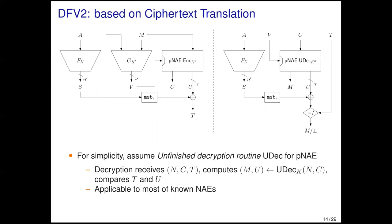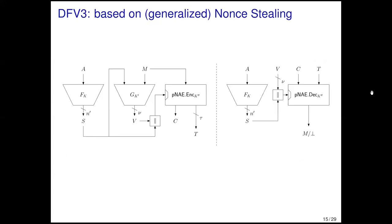This slide shows DFB2's encryption and decryption. For simplicity, we assume an unfinished decryption routine, denoted by U-Dec, for the plain nonce-based encryption. The decryption receives the tuple N, C, T, then computes U-Dec of N and C, which produces M and U, and finally computes T XOR U. This assumption holds for most known nonce-based AE schemes. The third scheme, DFB3, uses a generalized version of nonce-steering.